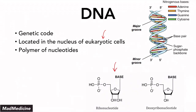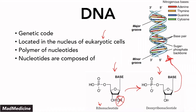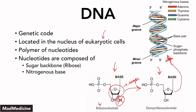You have your ribonucleotide and your deoxyribonucleotide. The difference between the two has to do with this OH group — the OH group gets removed from a ribonucleotide to create a deoxyribonucleotide, which can then form DNA. You need deoxyribonucleotides to have deoxyribonucleic acid, which is DNA. Ribonucleotides will form RNA. Nucleotides themselves are composed of a sugar backbone, a nitrogenous base, and a phosphate group — those are the three components of a nucleotide.